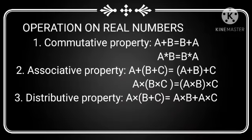Next, we will see the operations on real numbers. First one: Commutative property. In addition, a plus b equals b plus a. In multiplication, a into b equals b into a.